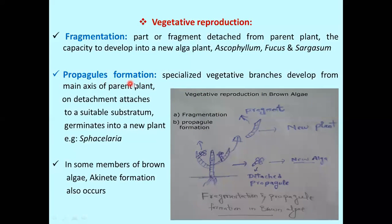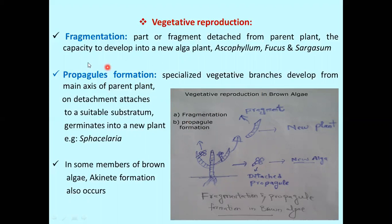The next type is propagule formation. Propagules are specialized vegetative branches which develop from the main axis of the parent plant and on detachment, these attach to a suitable substratum and germinate into a new plant. As you can see here, this is the main parent plant and these specialized structures — known as propagules — detach and attach to a suitable substratum and germinate into a new plant.